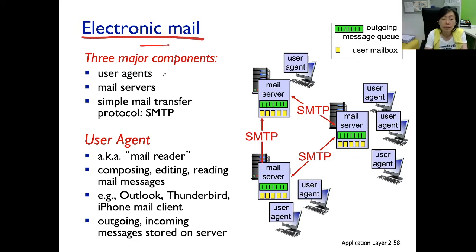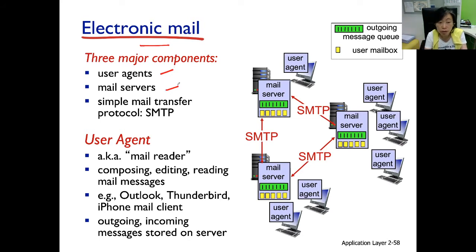The first component is the user agent — the software running on the machine closer to the users. Mail servers are the software running on more resourceful machines farther away from the users. Among these mail servers, it runs the protocol SMTP, the Simple Mail Transfer Protocol.